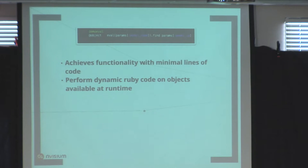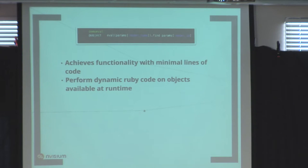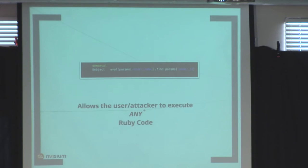Even though that pattern looks like it's just running `.find`, it will actually evaluate `params[:model_name]` first. So if that was a system call with `ls`, it evaluates that before doing `.find`. The good thing is you've achieved the same functionality as the previous two examples in one line of code. But you're giving the attacker the ability to execute any code they want, so you have to think carefully about that.